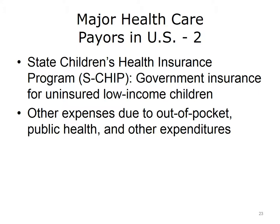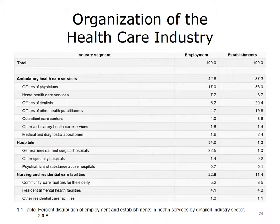There are also public health expenditures typically made by federal, state, or local governments, and other kinds of expenditures on health-related items. This table reflects the organization of the health care industry and shows the percent distribution of employment in health services establishments in 2008. About 87% of establishments and 42% of employment are in ambulatory health care services. Hospitals comprise 1.3% of establishments but employ 34.6% of workers, while nursing and residential care facilities are about 11% of establishments and employ about 23% of workers in the health services sector.